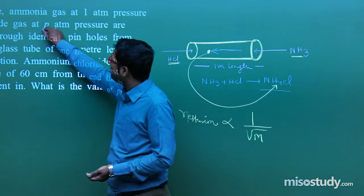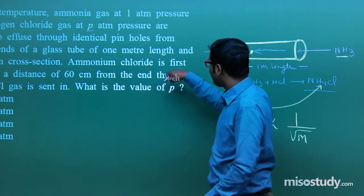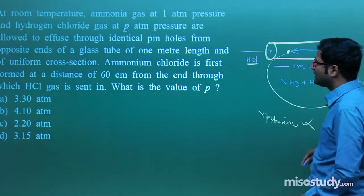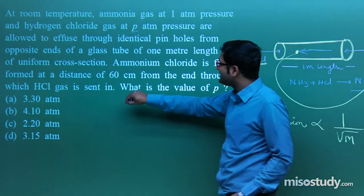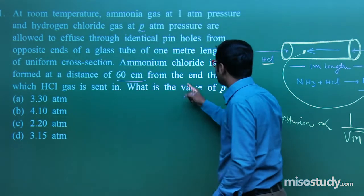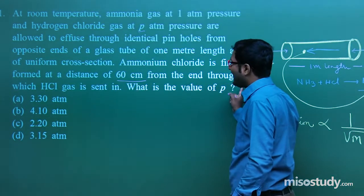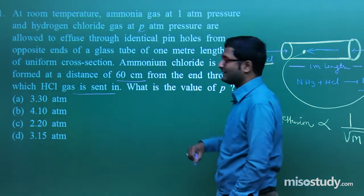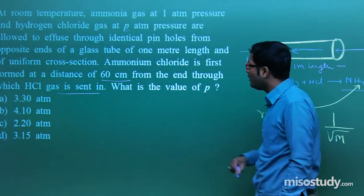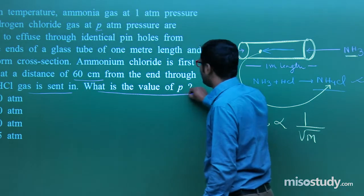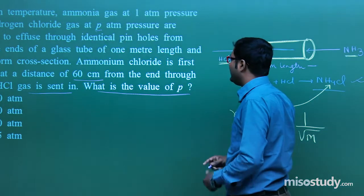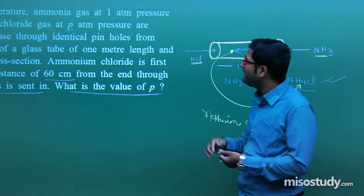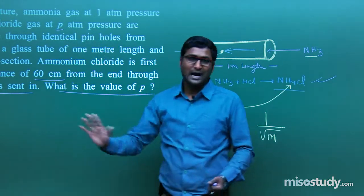There is an involvement of P here. Ammonium chloride is first formed at a distance of 60 cm from the end through which HCl gas is sent in. What is the value of P? That is, we have to find the value of P.